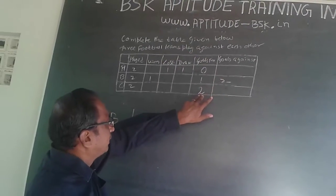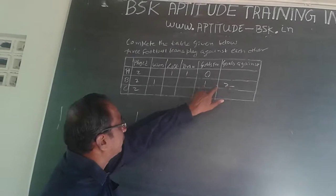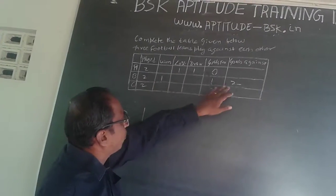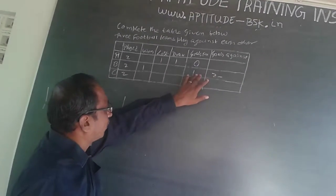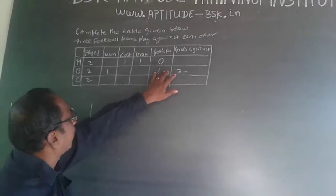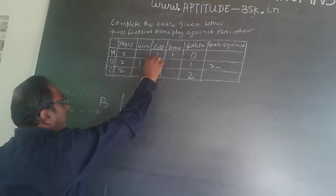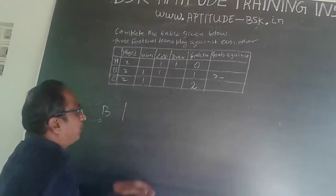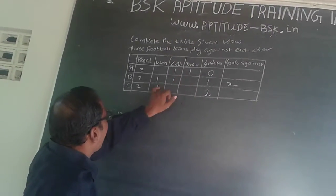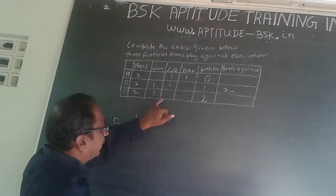When you see the goals against and goals for for B - goals against is more than the goals for. So B has lost to C, and C has won against B.